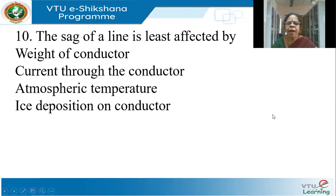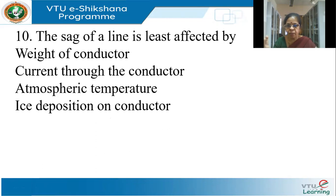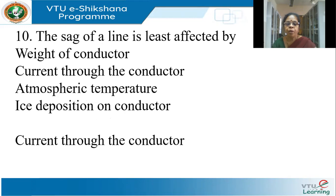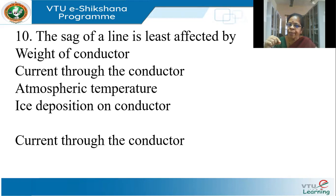The sag of a line is least affected by which factor? Weight of the conductor affects sag directly. Atmospheric temperature causes heating and affects sag. Ice deposition on the conductor definitely affects sag. So the sag is least affected by current through the conductor — though current does cause some heating, it is the least significant factor among the options.